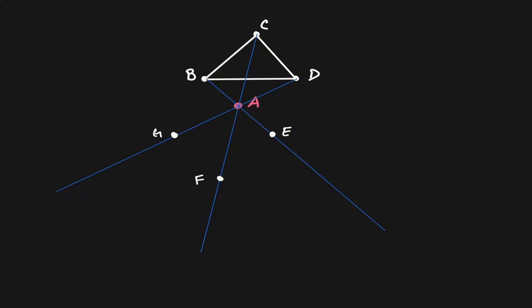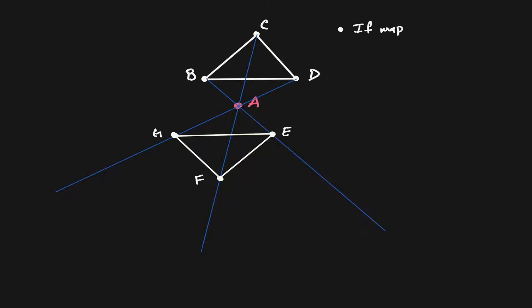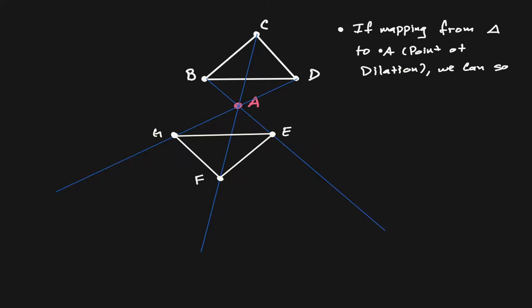Let's connect those points to create a new triangle. Let's understand what we have done here. Point D was mapped to point G, point C was mapped to point F, and point B was mapped to point E. Because this mapping goes from the triangle always towards and through point A, we can say that we have a negative dilation. And because we copied the original distance but now in a negative direction, this is a negative dilation with a scale factor of negative 1.